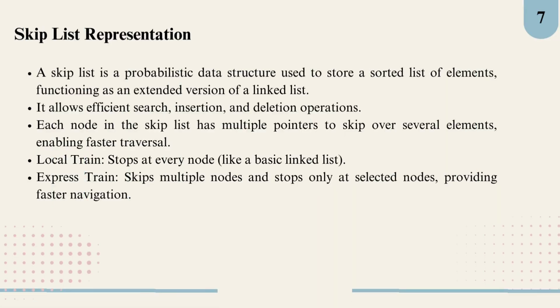Now let's talk about the skip list representation, an advanced and efficient way to store sorted elements. A skip list is a probabilistic data structure that builds on the idea of a linked list, but adds a twist for faster operations. Think of it as a linked list that's been upgraded for speed. Each node in a skip list has multiple pointers, allowing it to skip over several elements, which makes search, insertion, and deletion operations more efficient.